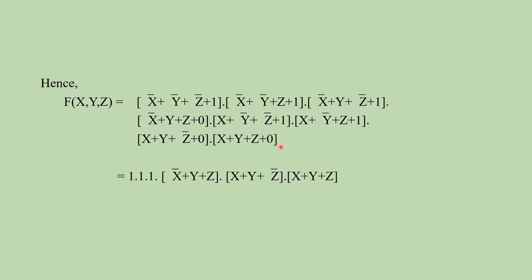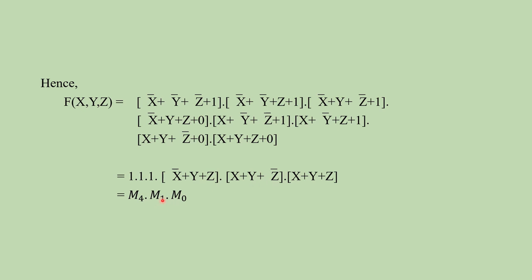By reducing the expression using Boolean switching algebra, we know that 1 + x̄ = 1, 1 + ȳ = 1, 1 + z̄ = 1. So those terms reduce to 1. The remaining max terms are identified: (x + ȳ + z̄) corresponds to m4 (binary 100), (x + ȳ + z) corresponds to m1... and (x + y + z) corresponds to m0 (binary 000).